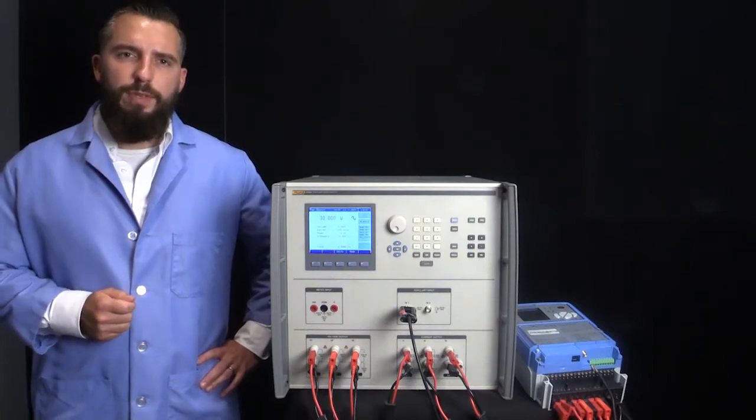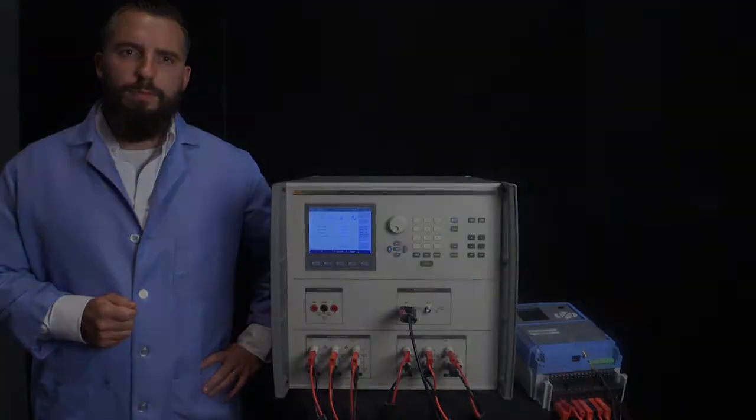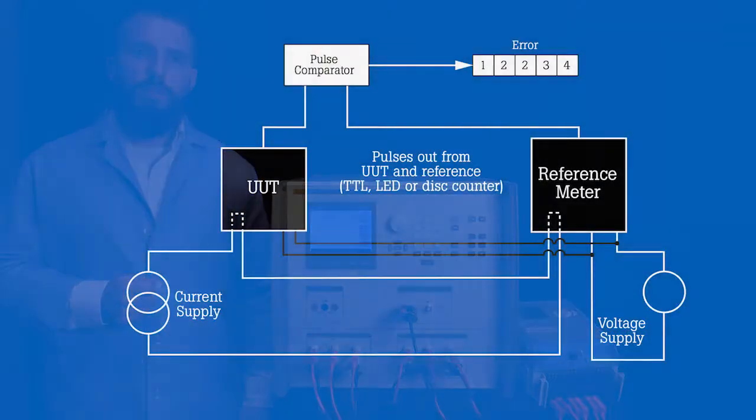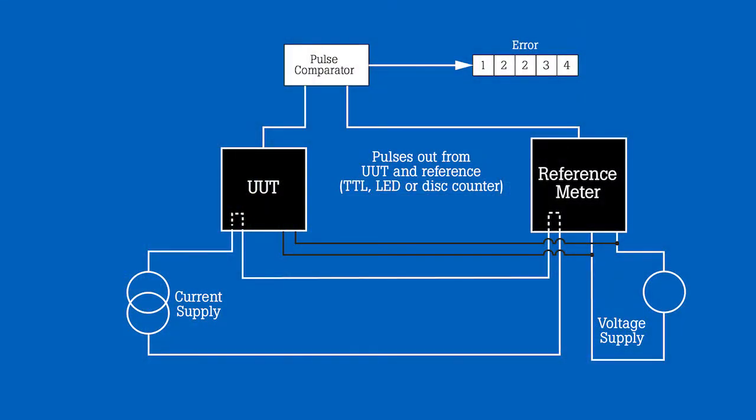Each pulse represents a specific number of watt hours. Calibrations are traditionally performed using a reference measurement technique where a known amount of energy is simultaneously supplied to a reference meter and the meter under test. A reading from the reference meter is then compared to a reading from the UUT and the error is calculated.